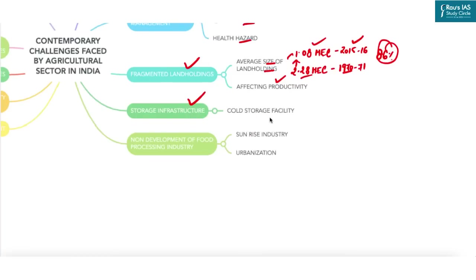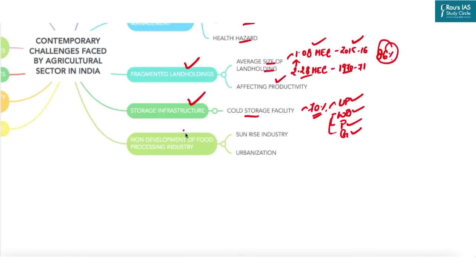Storage infrastructure is another challenge — 70% of India's total cold storage capacity is limited to just four states: UP, West Bengal, Punjab, and Gujarat, while states like Maharashtra and Karnataka with large export potential lack adequate facilities. The food processing industry also remains underdeveloped. Despite it being a sunrise industry with growing demand driven by urbanization and rising per capita income, it is currently at a nascent stage, accounting for less than 10% of total food produced in the country.